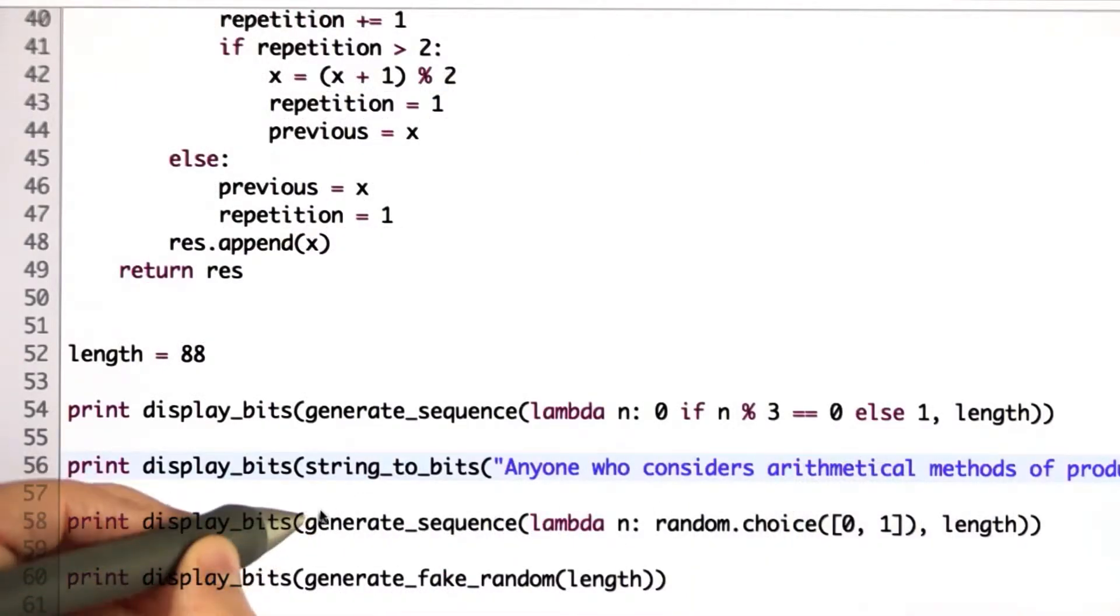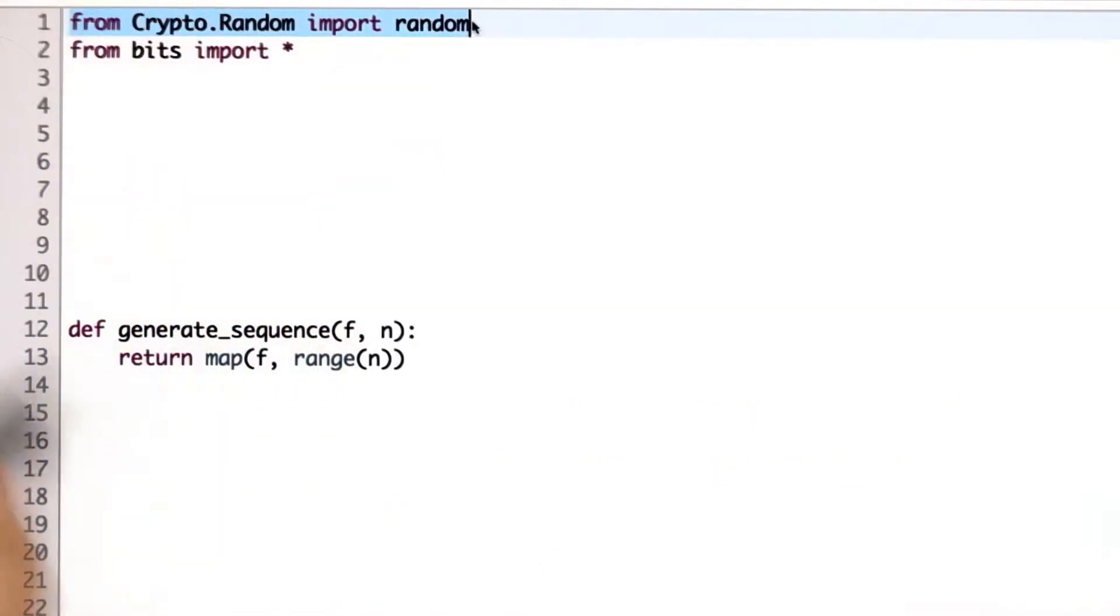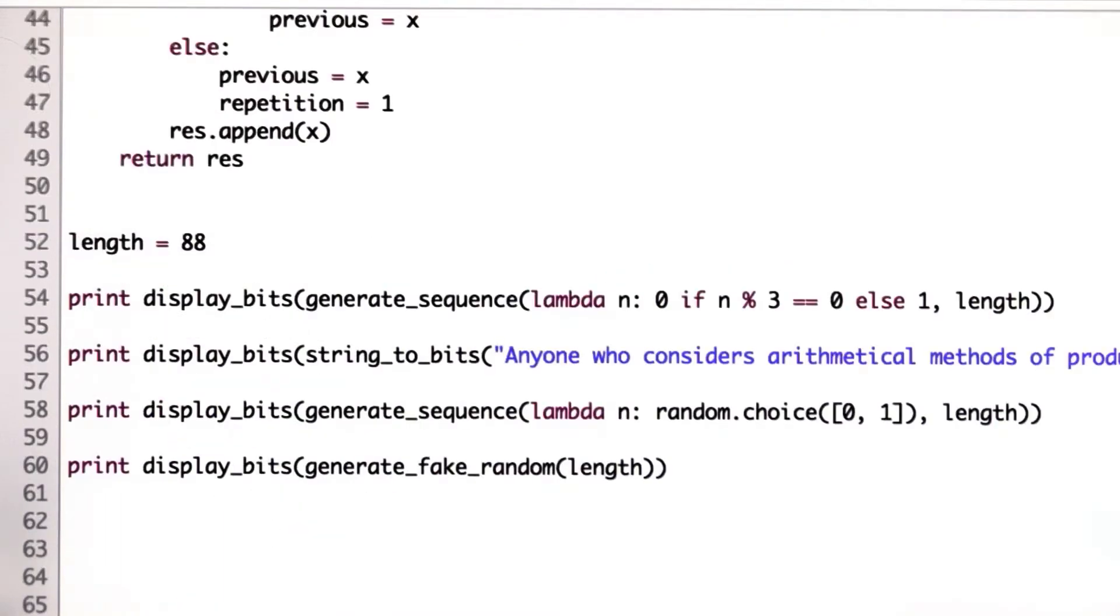The third one is actually designed to be random. So, we're using the random choice method, and that's provided in the PyCrypto library that I'm using to generate random numbers. And it claims to generate fairly good cryptographic random numbers. So, this third sequence, at least, is generated in a way that is designed to be random.